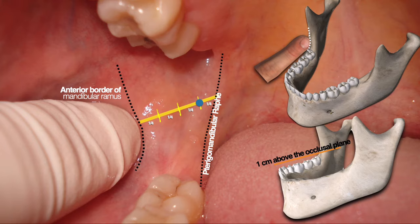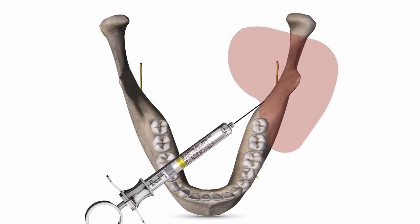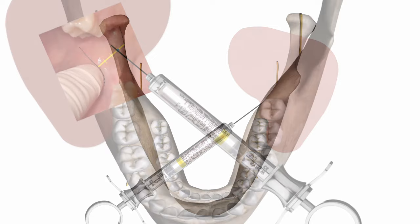The puncture point will be three-quarters of the distance from the anterior border of the mandibular ramus along this imaginary line to the deepest part of the pterygomandibular raphe. A basic mistake is to make the puncture much more anteriorly, which causes the needle to touch the bone very early and the anesthetic solution is deposited in the wrong place.